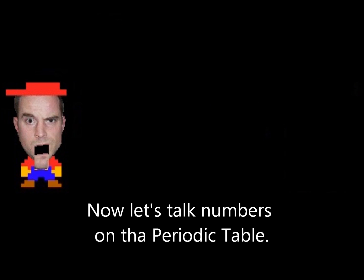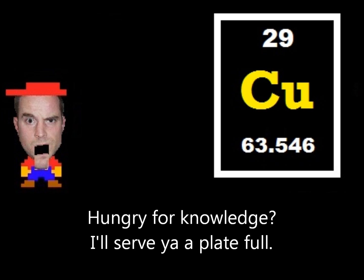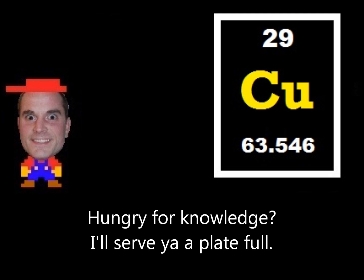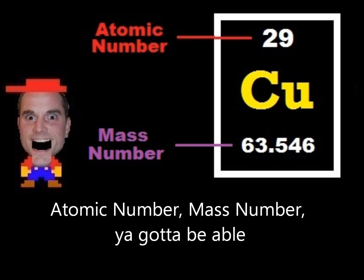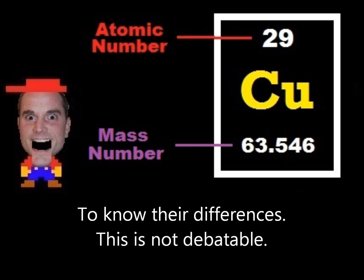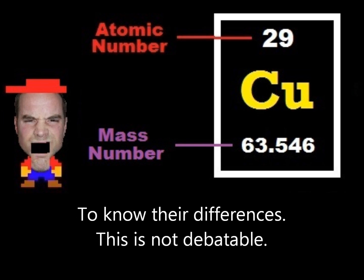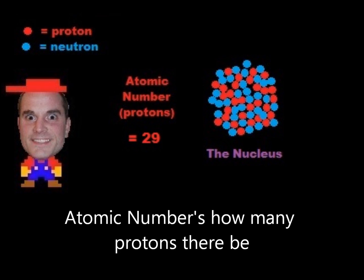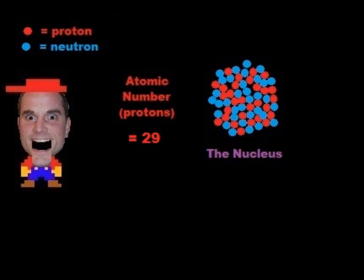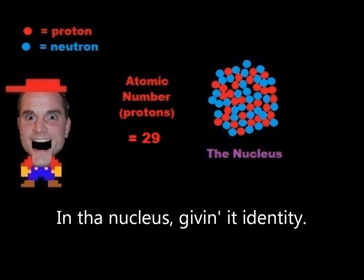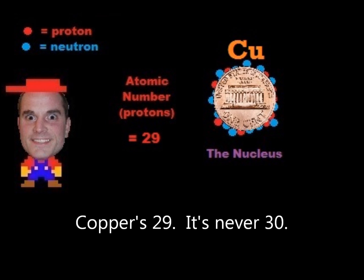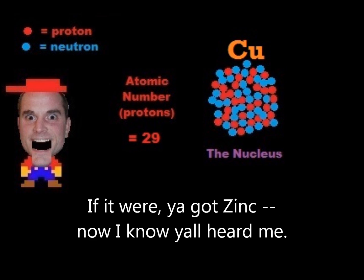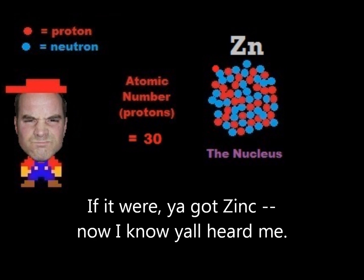Now let's talk numbers on the periodic table — hungry for knowledge, I'll serve you a plateful. Atomic number, mass number — you gotta be able to know their differences. This is not debatable. Atomic number is how many protons there are in the nucleus, giving it its identity. Copper's 29, it's never 30 — if it were, you'd have zinc. Now I know y'all heard me.